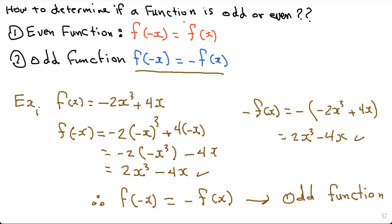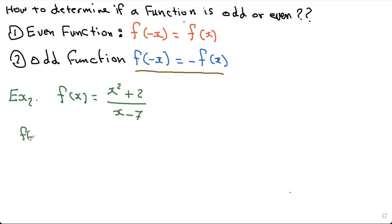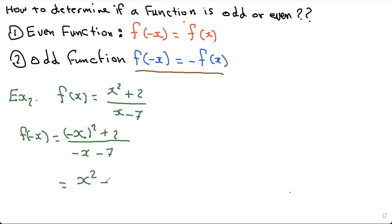Let's explore another example. Example 2: f of x equals x squared plus 2, all over x minus 7. Let's find f of negative x first. We go to every x and make it negative, so we get negative x squared plus 2. When you square the negative, you get positive, so that's x squared plus 2, all over negative x minus 7.